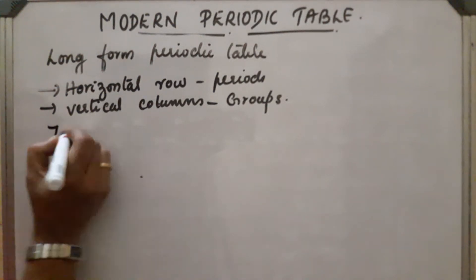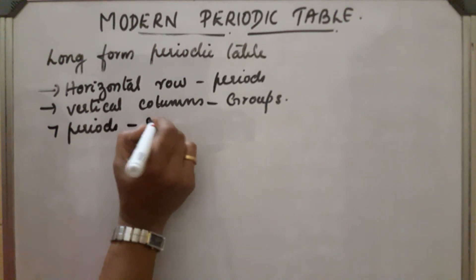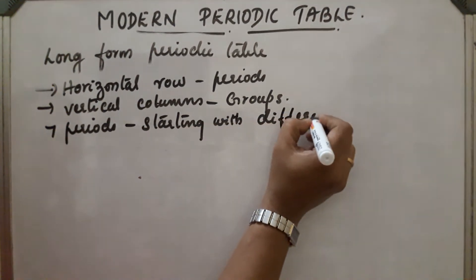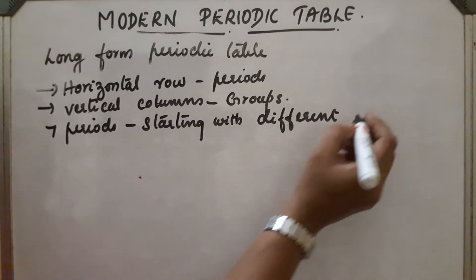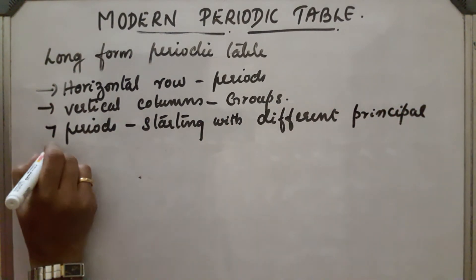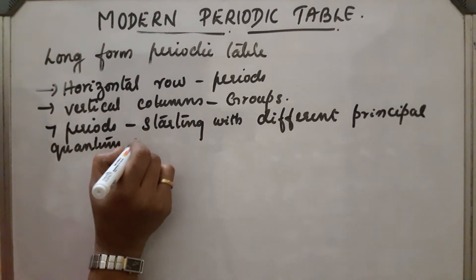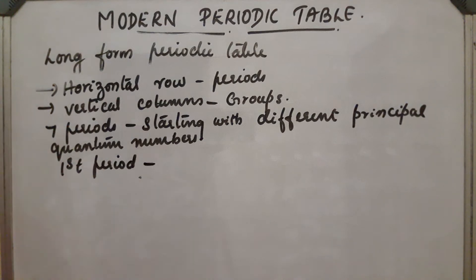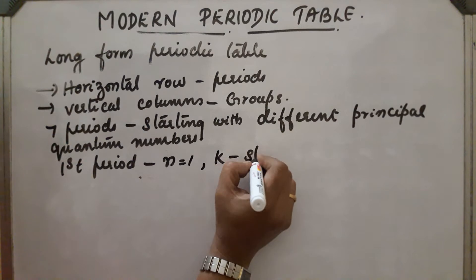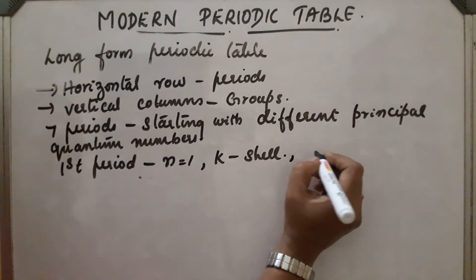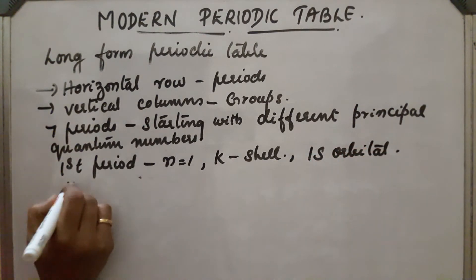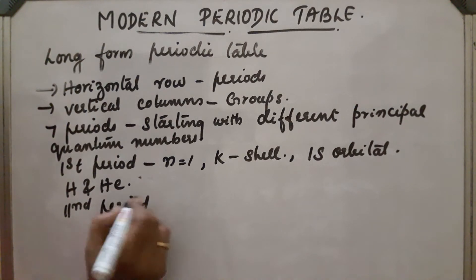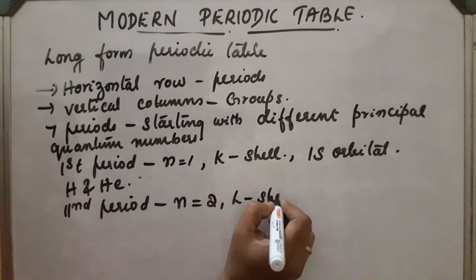There are seven periods, each starting with different principal quantum numbers n. The value of n changes for different periods. For the first period, electrons are arranged at n = 1, that is the K shell — so the 1s orbital. Examples are hydrogen and helium. For the second period, electrons are added at n = 2, that is the L shell, and so on.